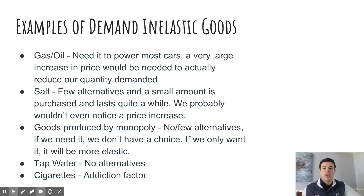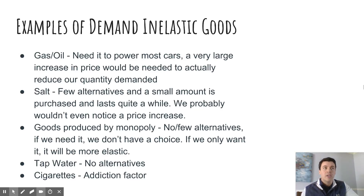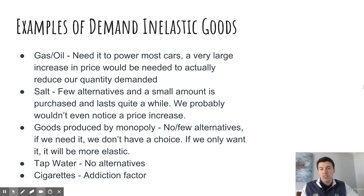Gas is one of my favorite examples — I think it works best because the idea is we need it to power our cars. There's no real alternative to that other than going the drastic step of going the electric car route, but it's going to take quite an increase in the price of gas for us to actually do that. So slight fluctuations in gasoline prices are going to impact our consumption of gasoline a little bit, but not massively. We're not quitting jobs or quitting school because of a 50-cent increase in gas prices, so we're still going to maintain a normal level of consumption of fuel. It's just going to be when prices change drastically that we start to see some drastic changes in consumption levels. So that's a good example of an inelastic good.